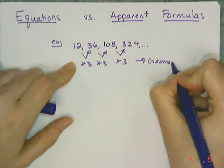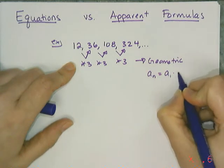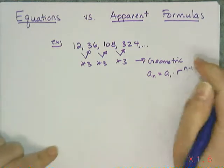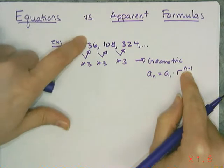And remember, the apparent formula for a geometric sequence is a_n = a_1 × r^(n-1), where a_1 is the first term, r is the common ratio, and n is the term number.